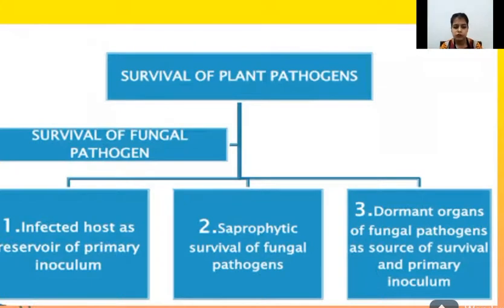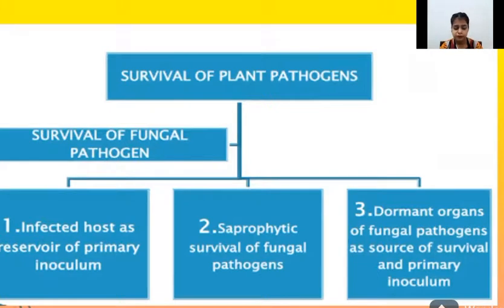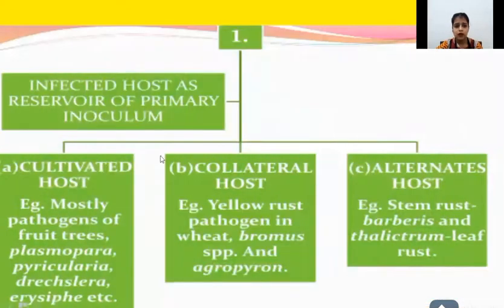The survival of plant pathogens: in the case of fungal pathogens, they can survive on infected hosts as primary inoculum, through saprophytic survival, and via dormant organs as survival structures and primary inoculant. Infected host means a host which is infected due to disease. Saprophytic survival involves dead and decaying organic matter. In the case of dormant organs, some parts of the fungal pathogen survive on primary inoculum and on parts of the plant.